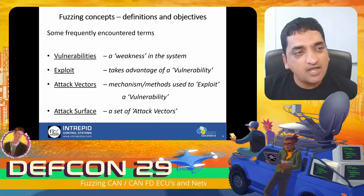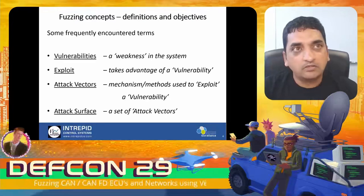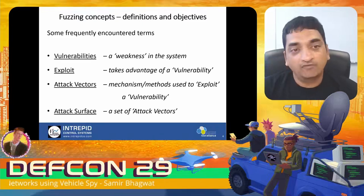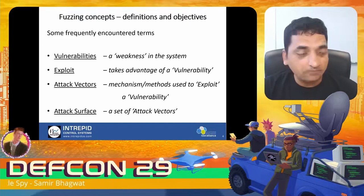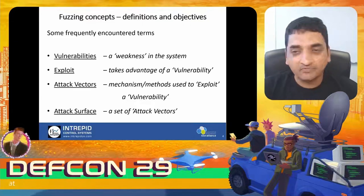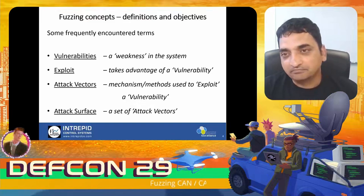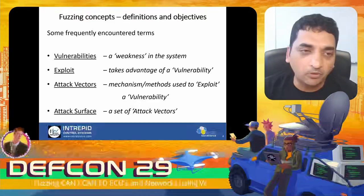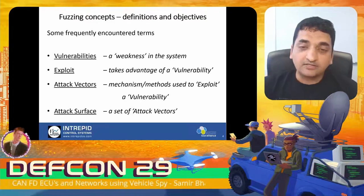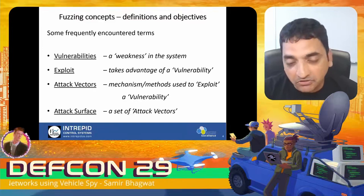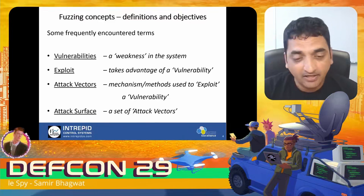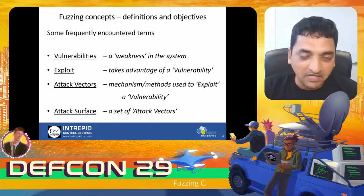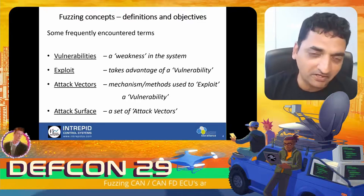Vulnerability is a weakness in a system — for example, the result of a design deficiency or an implementation bug. A vulnerability could be exploited to obtain unauthorized access to the system. One example is an unsecured diagnostic code or weakness in a gateway module, which could lead to unsecured access to a subnetwork ECU. You don't want your downstream ECUs to be accessed through a gateway in an unauthorized manner.